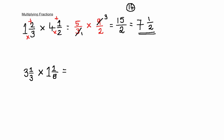Let's have a look at the second one below here as well. The first step is to change both these fractions into improper fractions. 3 times 3 is 9, plus 1 is 10, and the denominator stays the same, so it's 10 over 3, multiplied by — 8 times 1 is 8, plus the numerator is 9, over 8.